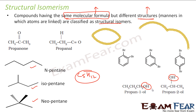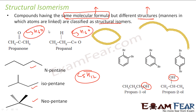Here also, if you see propanal and propenol, the functional group is different, but the number of carbon, hydrogen, and oxygen is the same. One has 3 carbons, 6 hydrogens, and 1 oxygen, and so does the other. So in both cases the molecular formula is the same, but they have different structures.